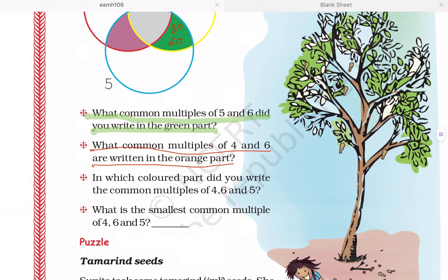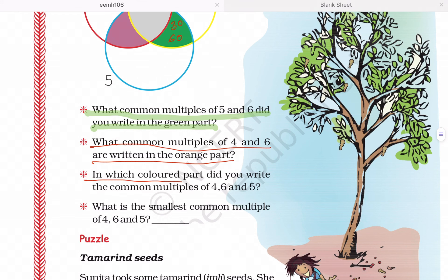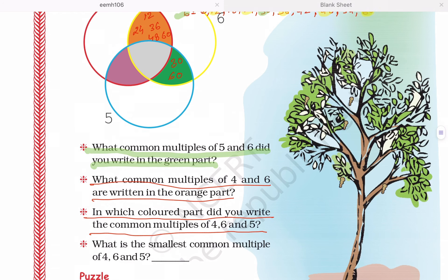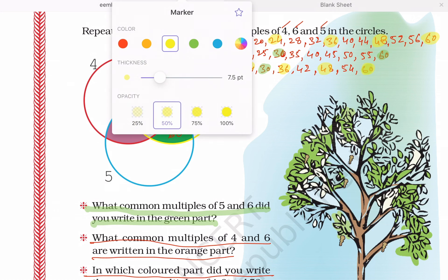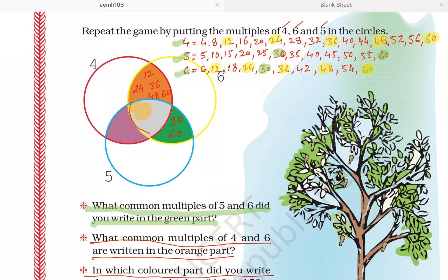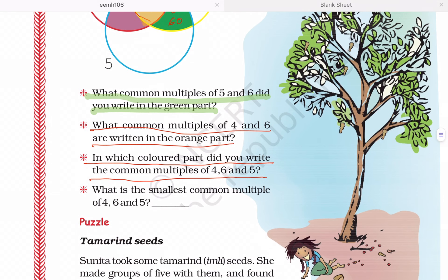Now the third question is, in which colored part did you write the common multiples of 4, 6, and 5? The common multiples of these three numbers are in this part. This is the common multiple of 4, 6, and 5. The answer will be gray color.